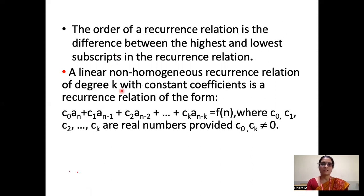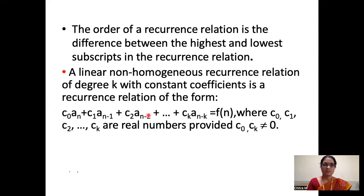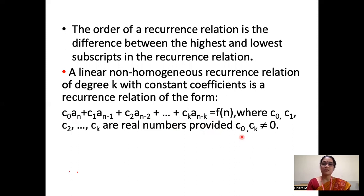Now, what is a linear non-homogeneous recurrence relation? If we have a recurrence relation in the form: C_0·A_n + C_1·A_{n-1} + C_2·A_{n-2} + ... + C_k·A_{n-k} = f(n), where C_0, C_1, C_2, ..., C_k are constants, this is called a linear non-homogeneous recurrence relation of degree k, where C_0 and C_k are not equal to 0.